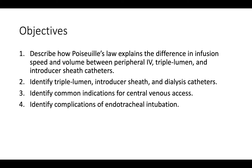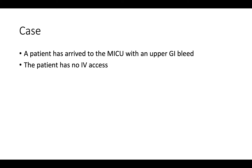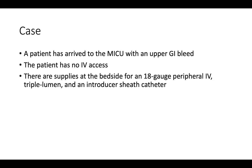Let's start with a case. You're admitting a patient with an upper GI bleed to the medical ICU. As you arrive at the room for your initial evaluation, the nurse tells you that the patient has no IV access. There are supplies for an 18-gauge peripheral IV, a triple lumen, and an introducer sheath catheter. The nurse asks which line you would prefer.